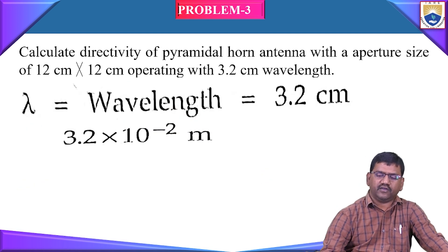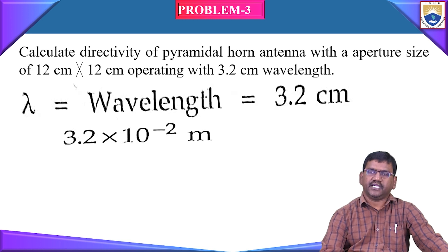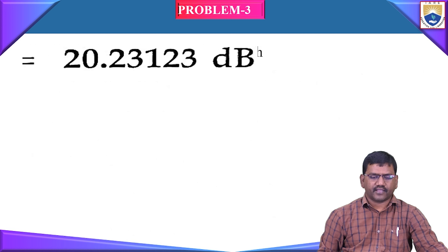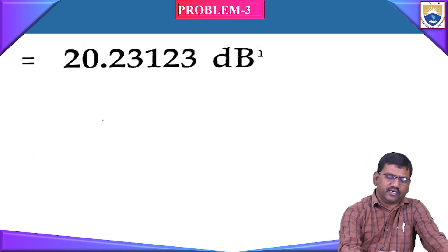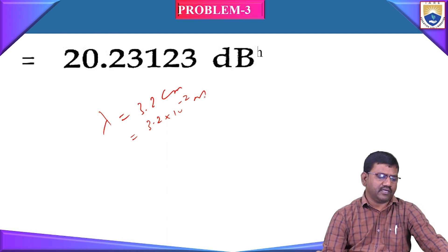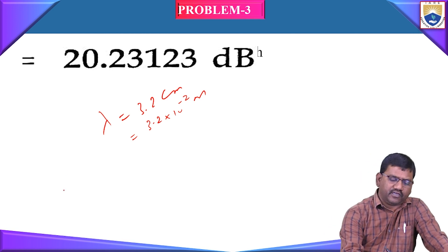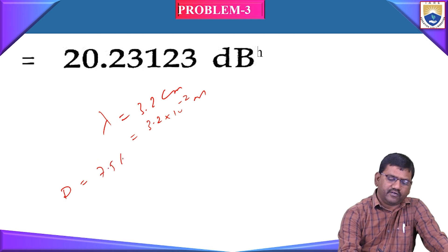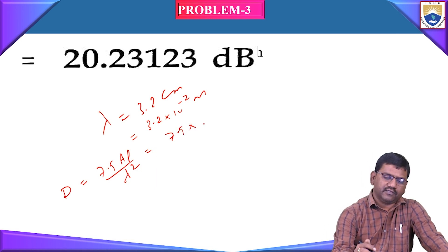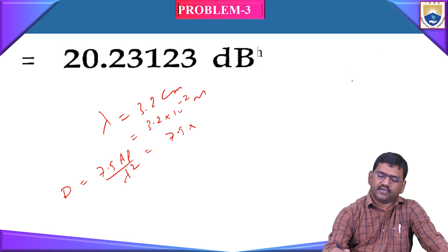Similarly, you can find out the directivity of the pyramidal horn. Calculate the directivity of a pyramidal horn antenna with aperture size 12 × 12 centimeters and wavelength 3.2 centimeters. The given data: lambda = 3.2 centimeters = 3.2 × 10⁻² meters. We need to find the directivity using D = 7.5 × a_p / lambda².